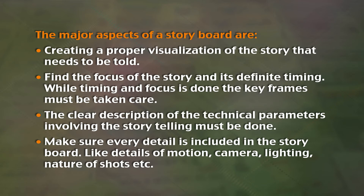Make sure every detail is included in the storyboard — details of motion, camera, lighting, nature of shots, etc. The primary step of creating a storyboard is finding the right template, which can be downloaded or created, suited to the purpose of your story. A template is like blank pages with small tabular columns or boxes. It is inside these boxes that the content is drawn. A storyboarding process can also be done with the help of computers.